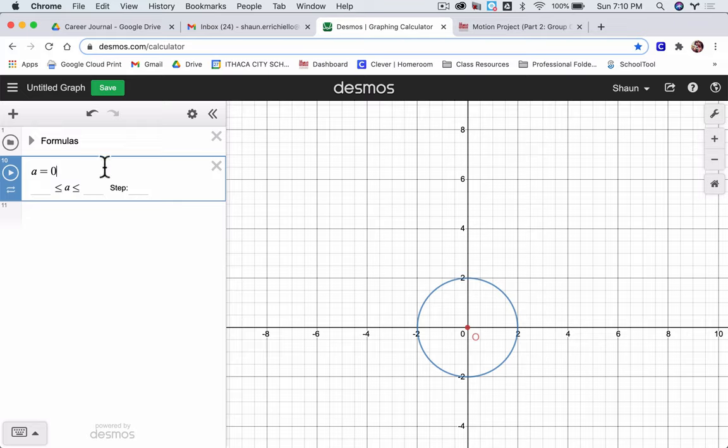Let's say I want my angle to go between 0 and, I don't know, 3 rotations on the circle. I'll type in 0 for my lower bound and 6pi for 3 rotations.